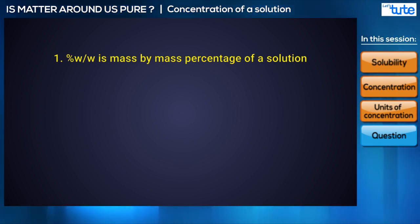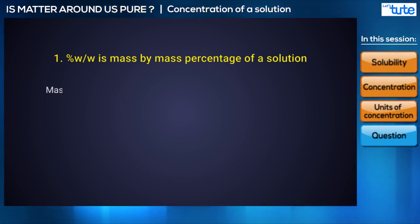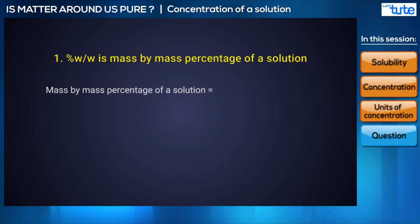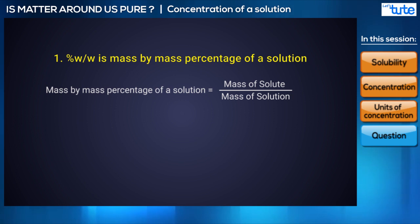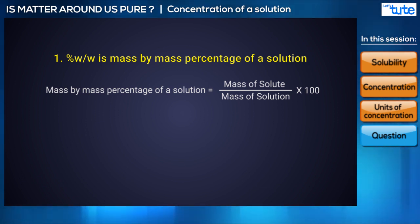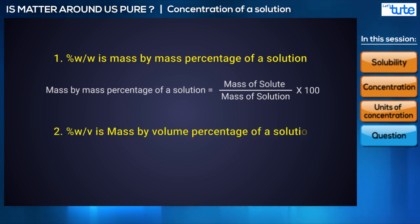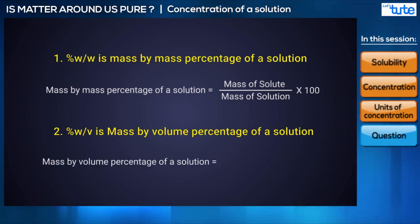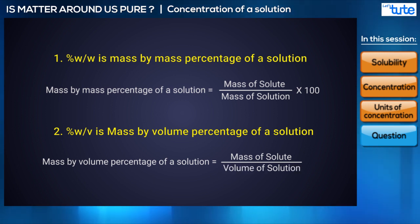Percentage W/W is called the mass by mass percentage of a solution, calculated using the formula: mass by mass percentage = (mass of solute / mass of solution) × 100. Since it is easier and more practical to find the volume of a solution than its mass, the more common term used is percentage W/V, which is mass by volume percentage, expressed as: (mass of solute / volume of solution) × 100.